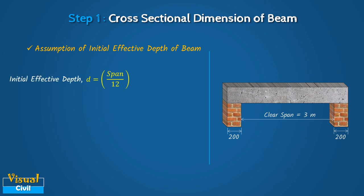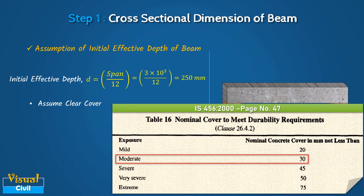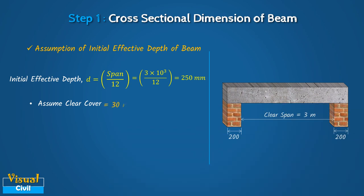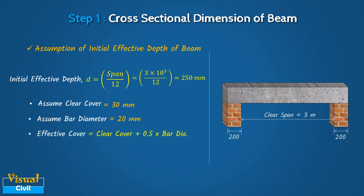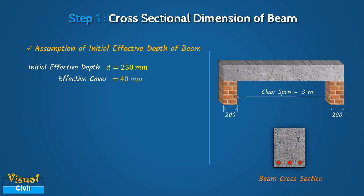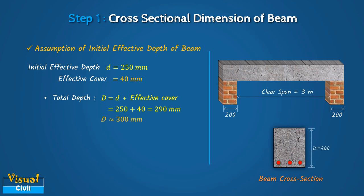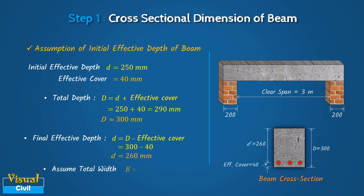Putting the value of span as 3 m in the ratio, we get the initial effective depth as 250 mm. Assume nominal clear cover by referring to table 16 of IS456 for moderate exposure as 30 mm and bar diameter as 20 mm. Calculate the effective cover by adding the clear cover and half the bar diameter, giving an effective cover of 40 mm. Compute the total depth by adding the effective cover to the effective depth, which comes to 290 mm. Round up the total depth to 300 mm. Recalculate the final effective depth as 260 mm, and assume the total width of the beam as 230 mm.